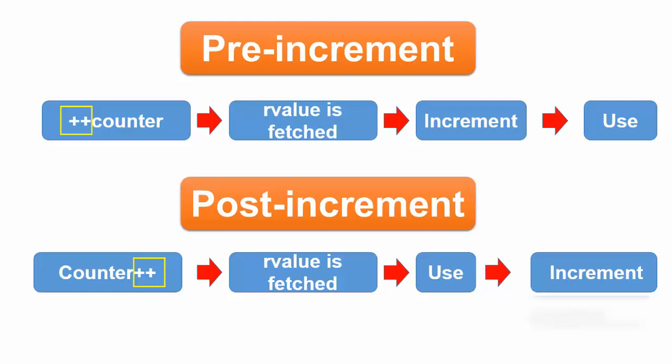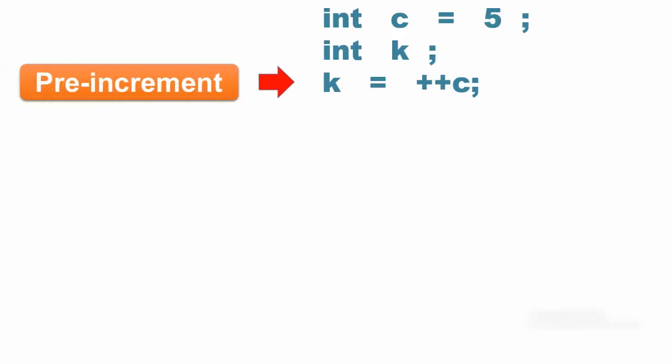What exactly is the difference between these two types? To understand this, consider the following code fragment. What is the value of K here? Because this is a pre-increment operator, the value of C which is 5 is fetched, its R value is then incremented to 6 and then the value is assigned into the R value of K. So K is now equal to 6.